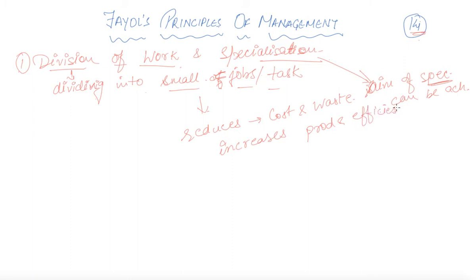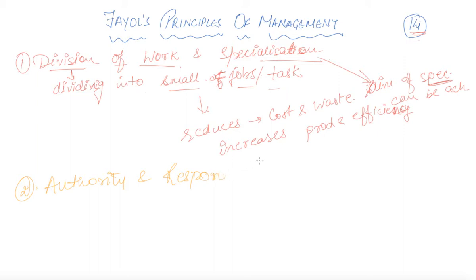So friends, this is basically your first principle provided by Henri Fayol. Coming towards the second principle provided by Fayol, which is Authority and Responsibility. These terms you will also learn in your organizing chapter, but here we are discussing them first.